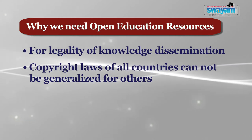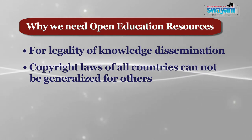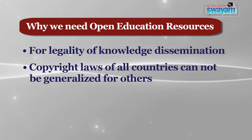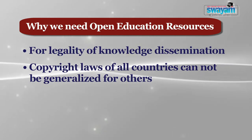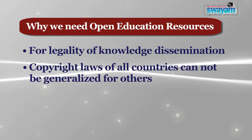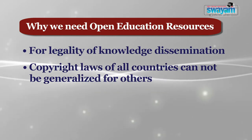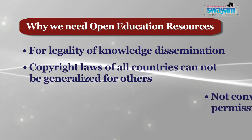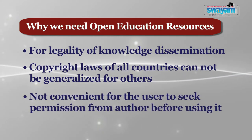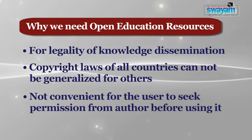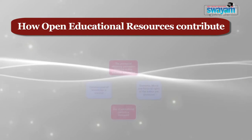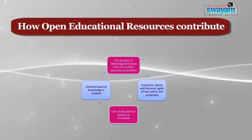Digital dissemination of knowledge has great potential for copyright infringement and in most instances, the user is not able to use or communicate copyrighted materials. The fast pace of knowledge creation and dissemination doesn't give users the option, nor is it convenient to obtain permission from the author before using the content. Through the mechanism of open access and e-commerce, the process of obtaining permission from the author becomes automated.